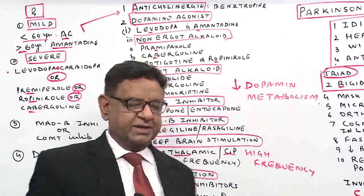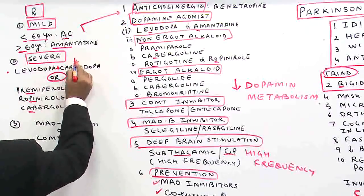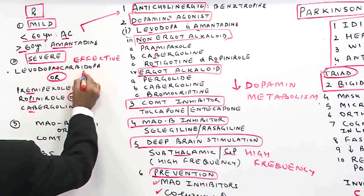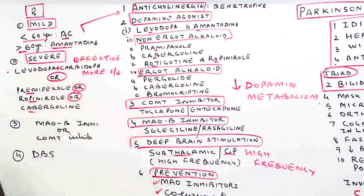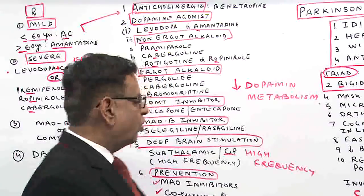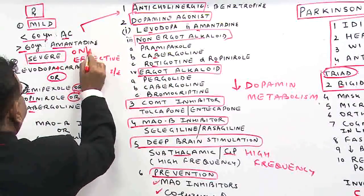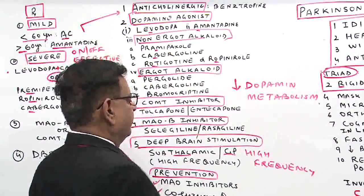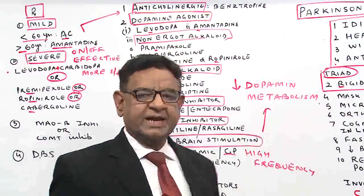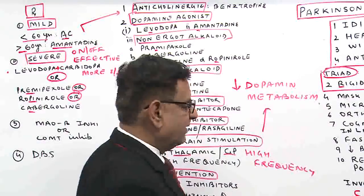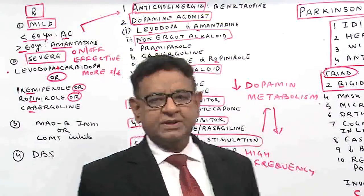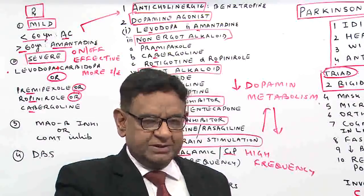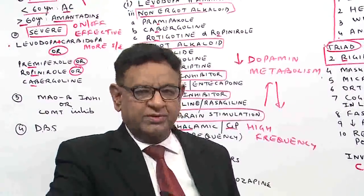Let us see the advantages and disadvantages. Levodopa is the most effective drug beyond doubt, but it has more side effects. It can cause end-of-dose syndrome, especially psychosis, and the on-off phenomenon. The on-off phenomenon means: when the drug level is high in blood, the patient improves, but when the level goes down, the patient has more problems. However, levodopa is effective, though with more side effects.